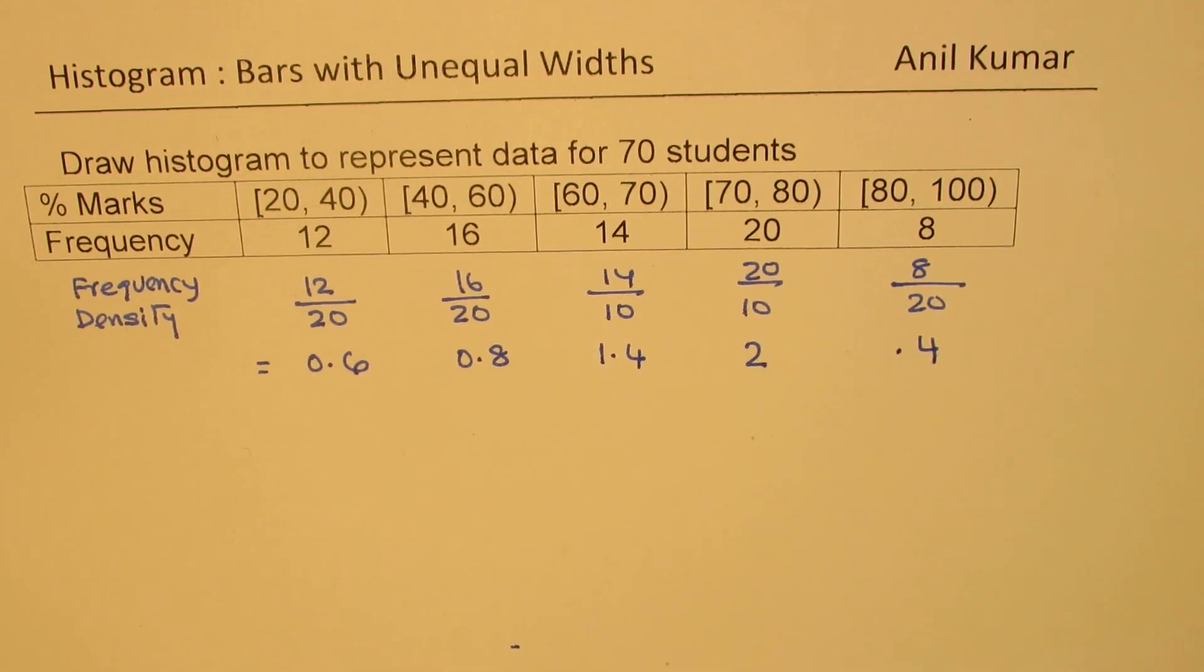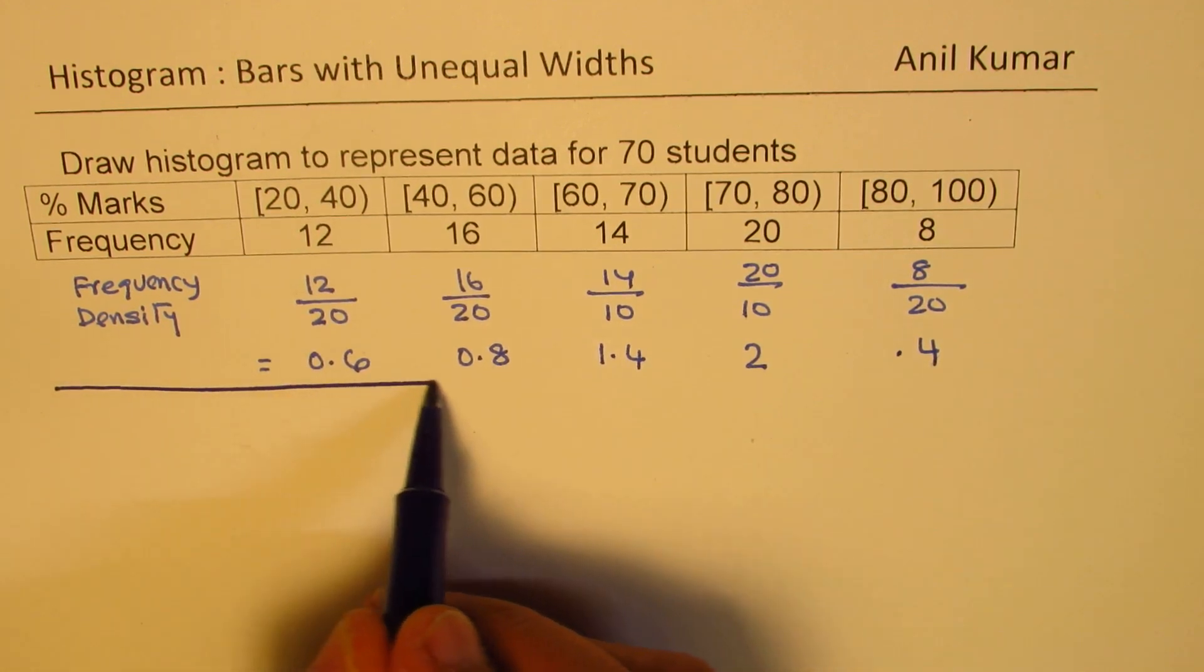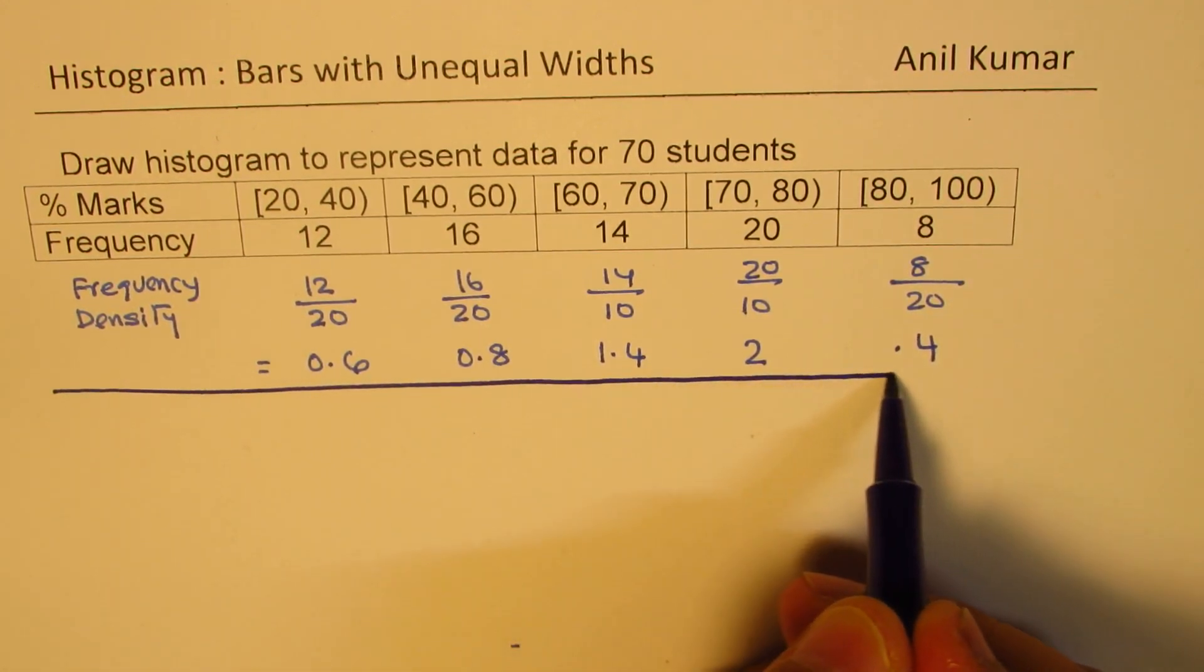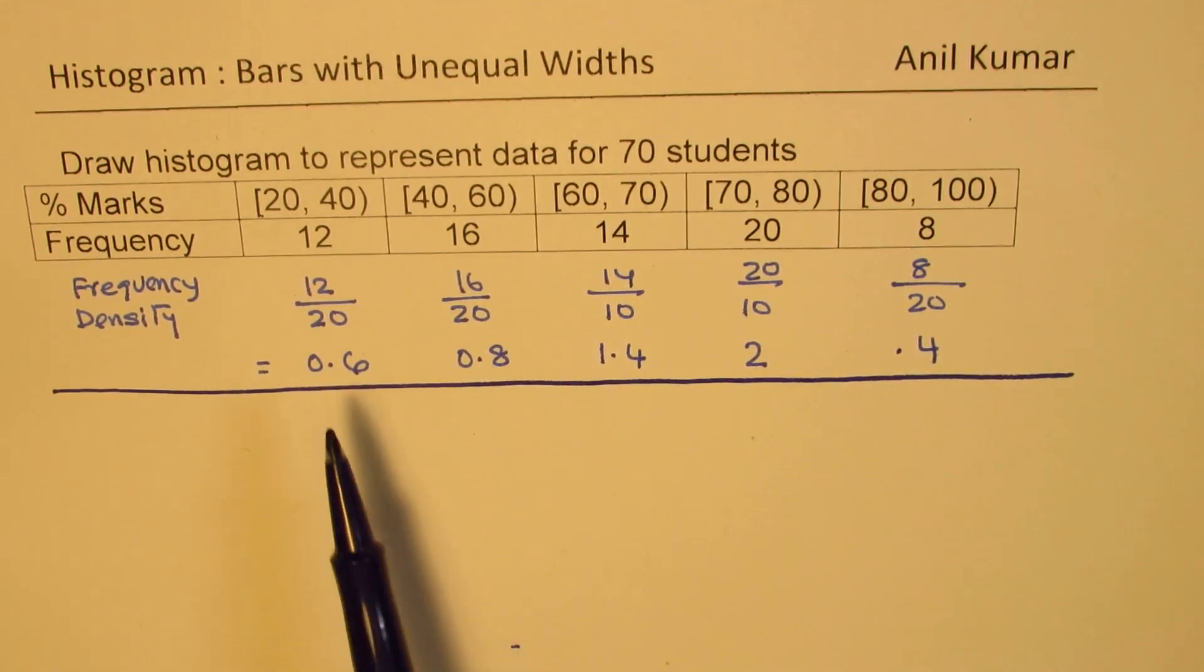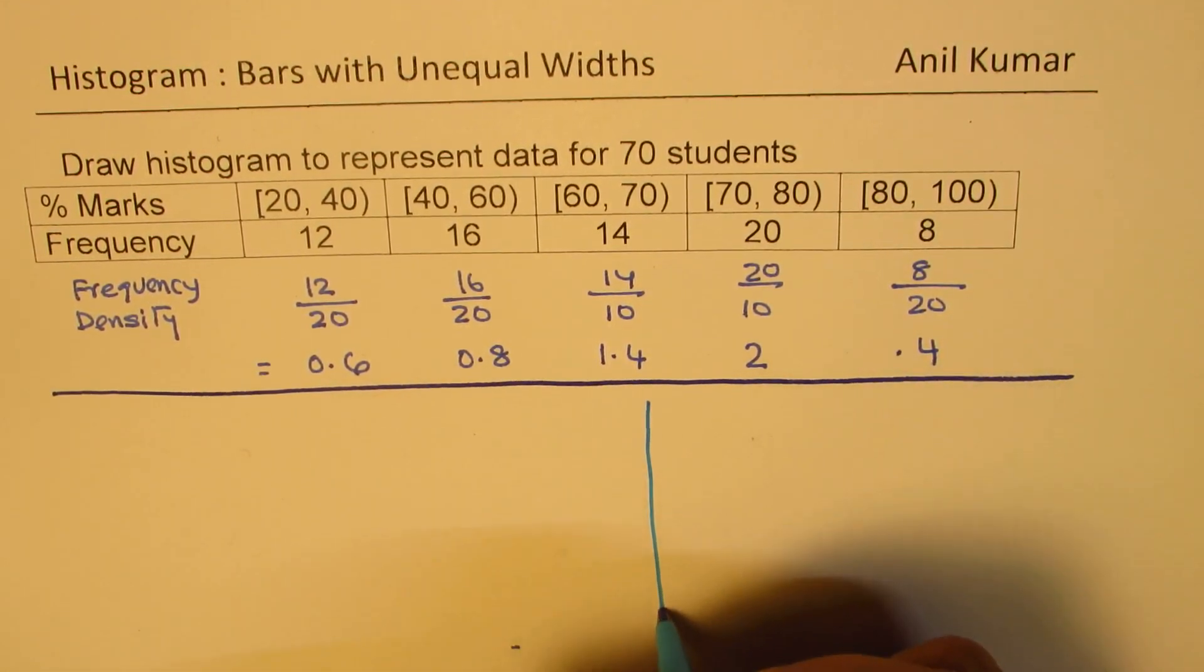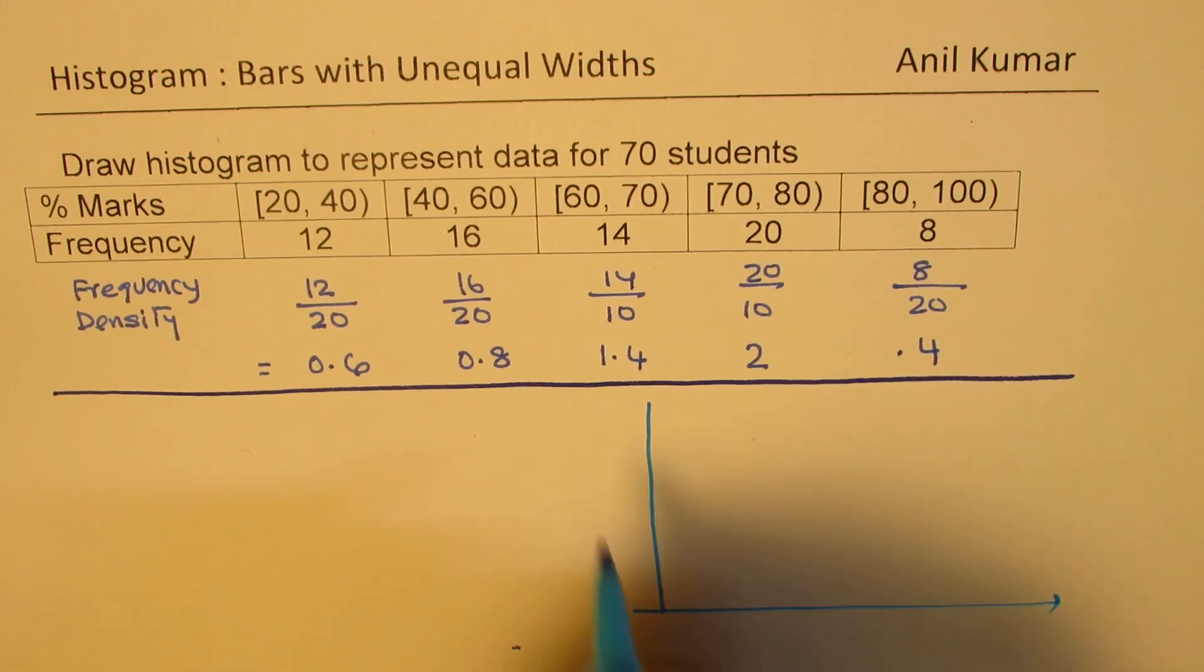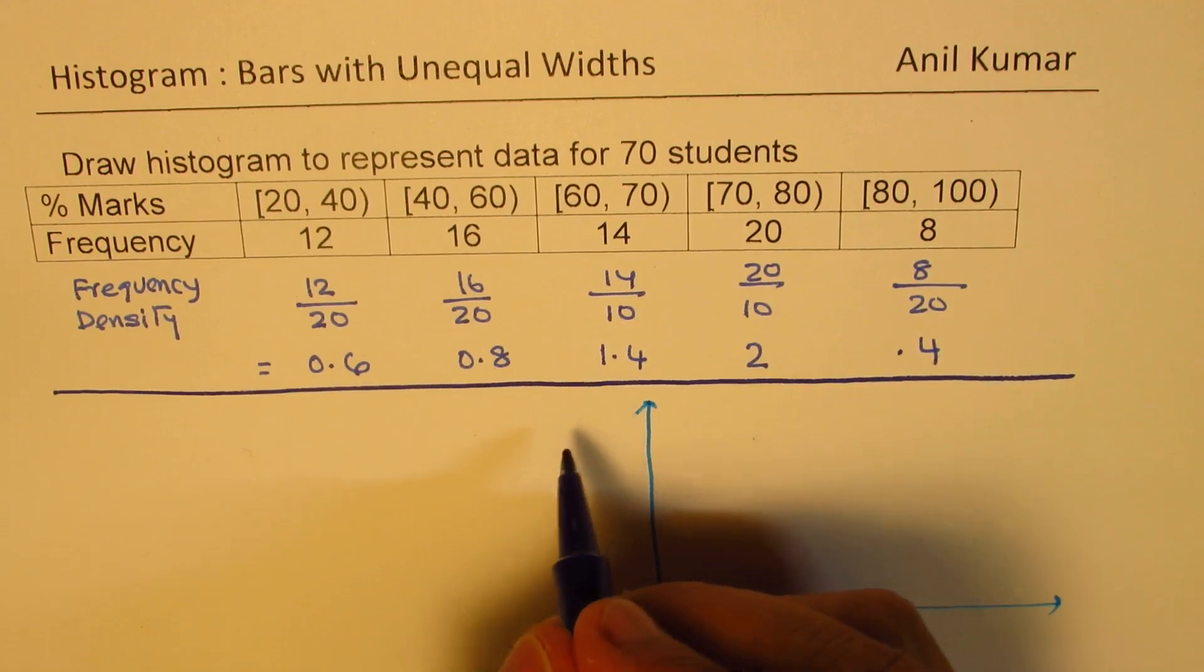Histograms are bar graphs with no space in between and with different widths. The area is what we are looking into. What we have on the vertical axis is frequency density, and here we have the intervals.